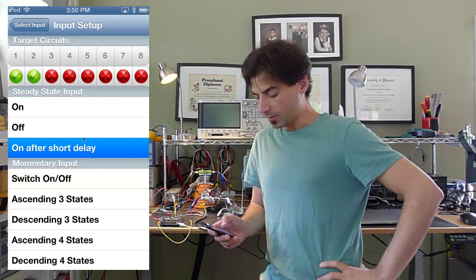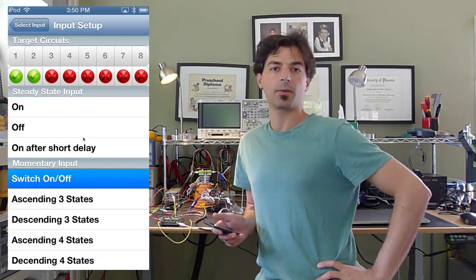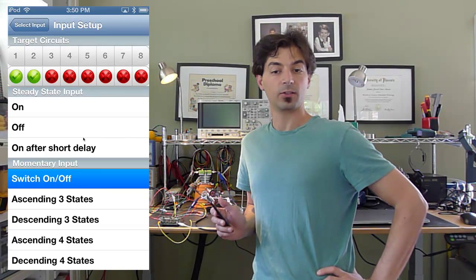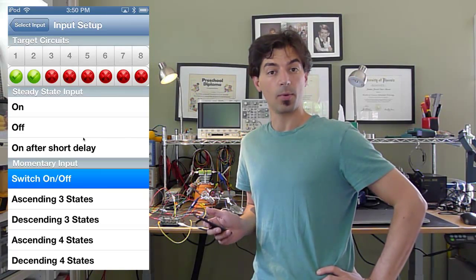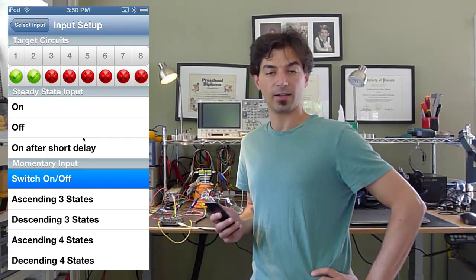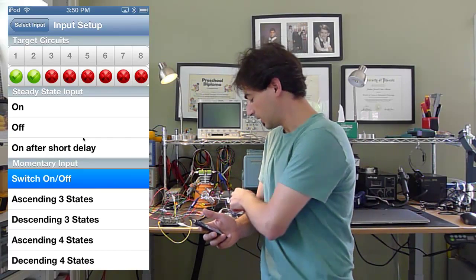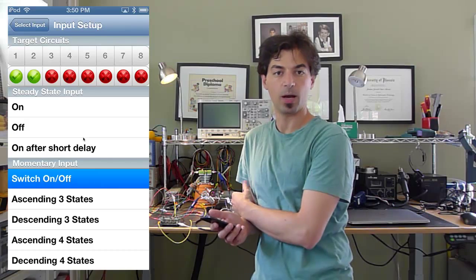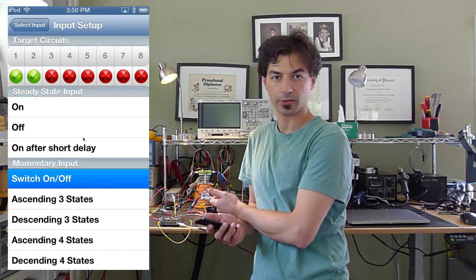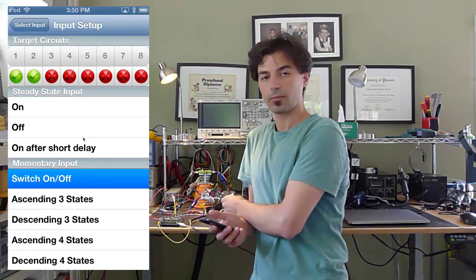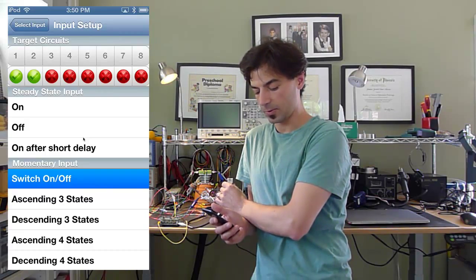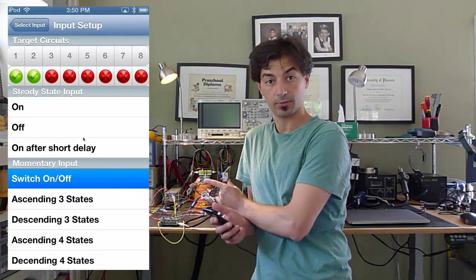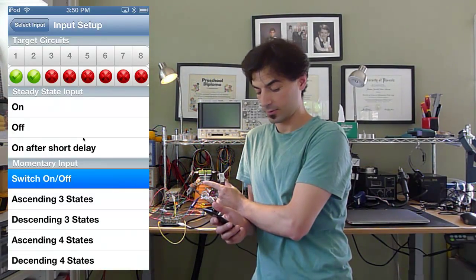And then we have momentary inputs. Momentary inputs are inputs that expect the signal to just be there for a moment, and then the effect sticks. So this would be the kind of thing you might attach a button to on your dash, so you can just click it. Momentary switch on, off.